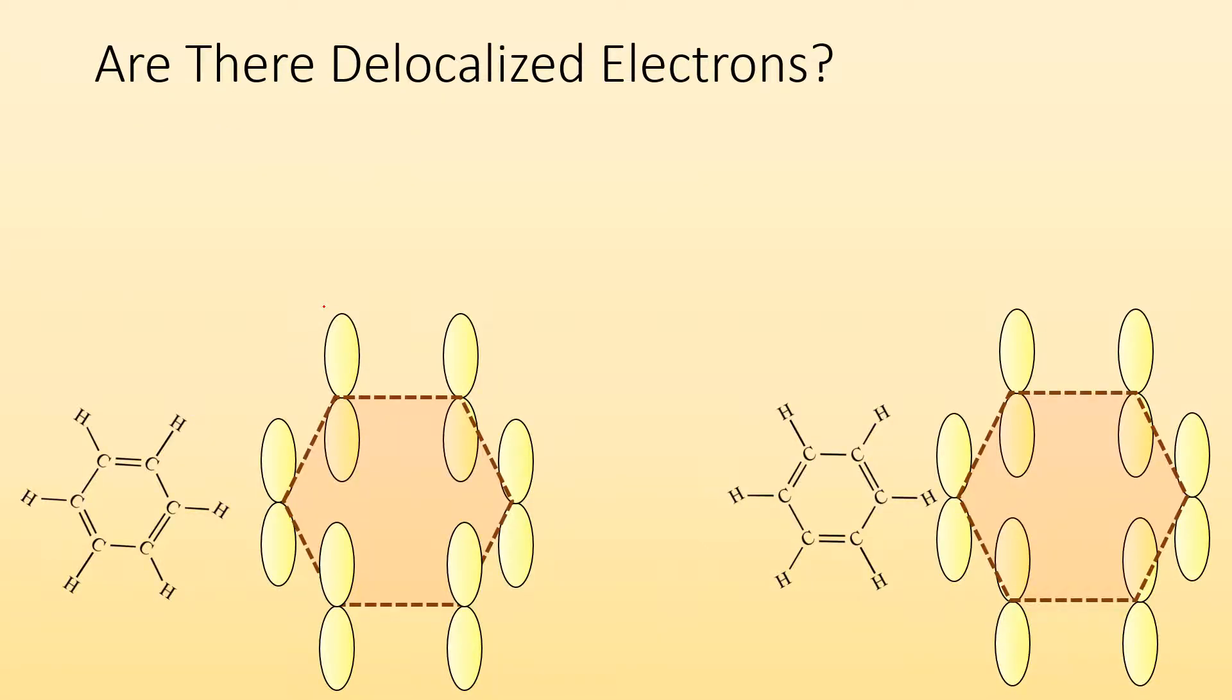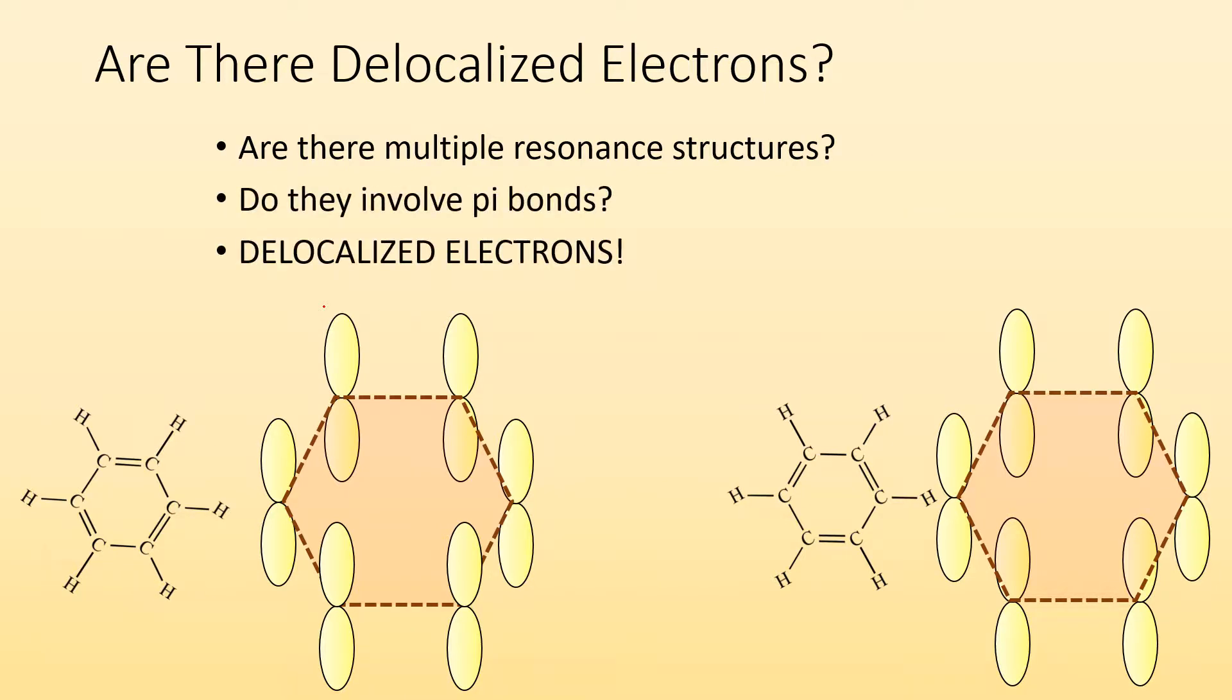So how do you know if there are delocalized electrons? Well, ask yourself, are there more than one resonant structure possible? Do they involve pi bonds? If so, you got delocalized electrons, right?